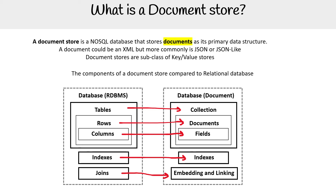If a key-value store can kind of store this, why would you use a document store? Well, there are just a lot more features around the documents themselves. Key-value stores had essentially no functionality, whereas the document store brings a lot more of the functionality that you're used to in a relational database, making things a little bit easier to work with.